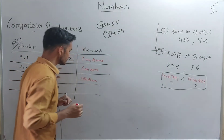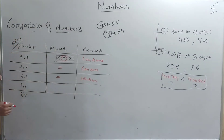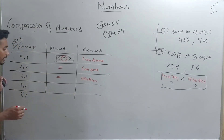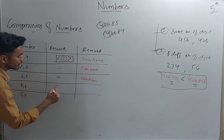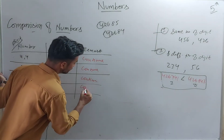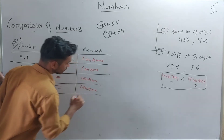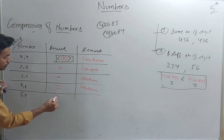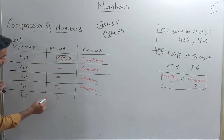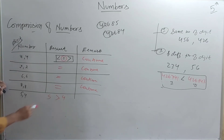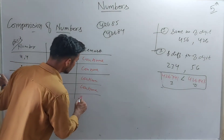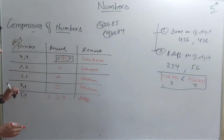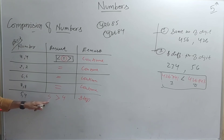Now we look at the fifth digit: 5 and 4. This shows a greater than relation — 5 is greater than 4. So here we stop because we have found the relation. The remark is 'stop' and 5 is greater than 4.